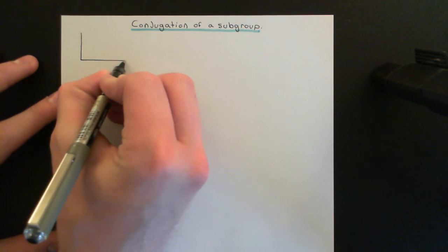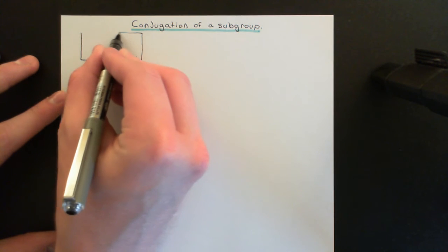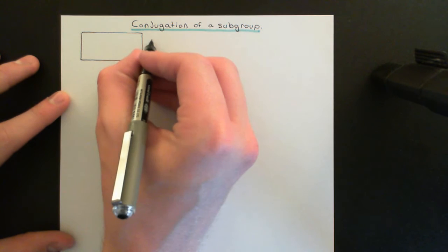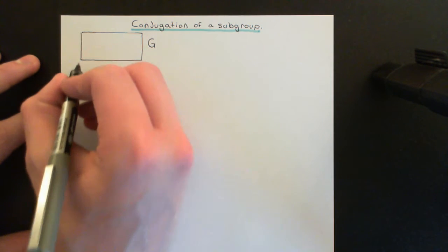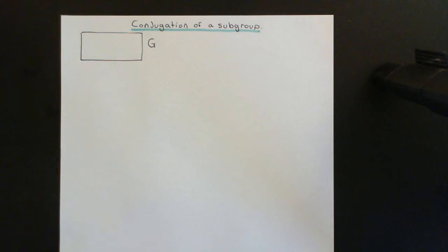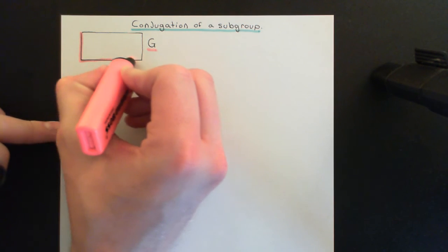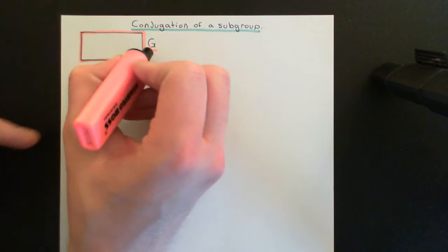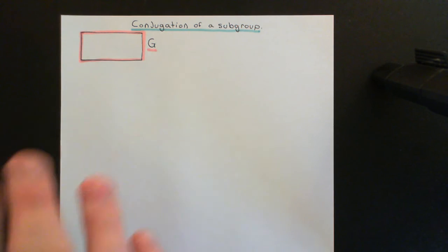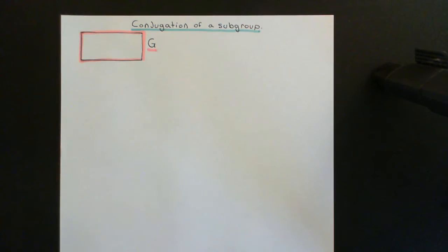So we're going to need a group to work with. We'll call our arbitrary group capital G, and we'll let this rectangle here denote the set that underlies the group capital G. We'll colour in capital G in red, and this rectangle is the set of elements in the group capital G. You'll also have a composition law defined on this, which will need to obey the axioms of group theory for it to actually be a group.